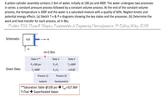Here's what we were given. The mass of water in the cylinder is two pound mass. State one was given two properties: a pressure of 100 psi and a temperature of 400 degrees Fahrenheit. Two independent properties define a state. In the saturation table at 100 psi, the saturation temperature is 327.86 degrees Fahrenheit. The temperature at state one is 400 degrees, which is higher, so state one is a superheated vapor.